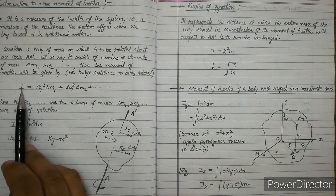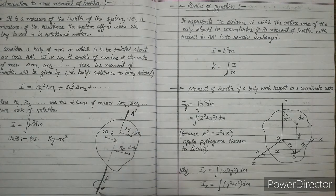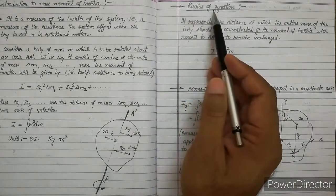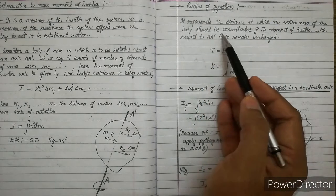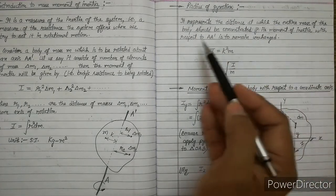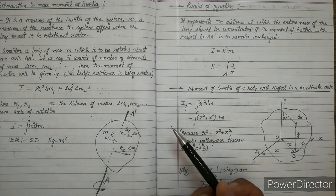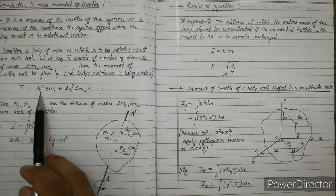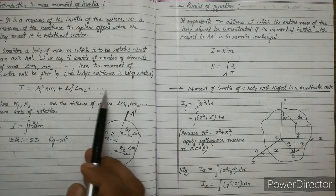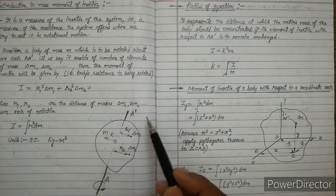...and we still get the same moment of inertia, then that distance k is termed as the radius of gyration. So it represents the distance at which the entire mass of the body should be concentrated if its moment of inertia with respect to A-A' is to remain unchanged. Earlier we were dividing the whole body into n number of masses and multiplying the mass of each small element by the square of its distance from the axis of rotation for all elements.